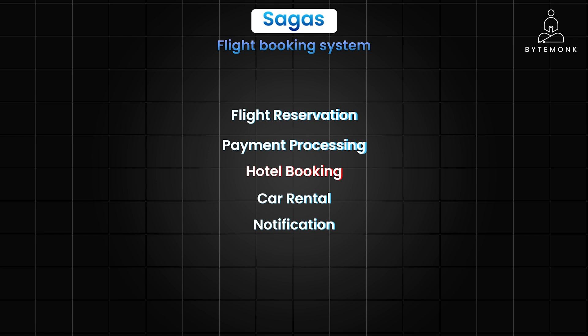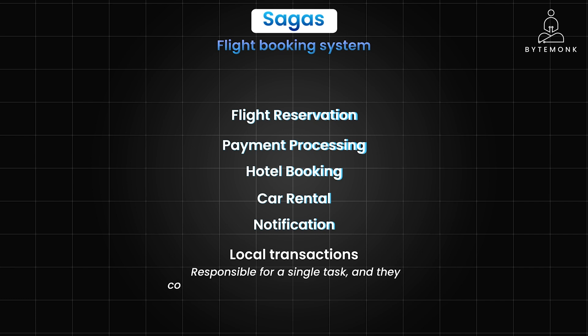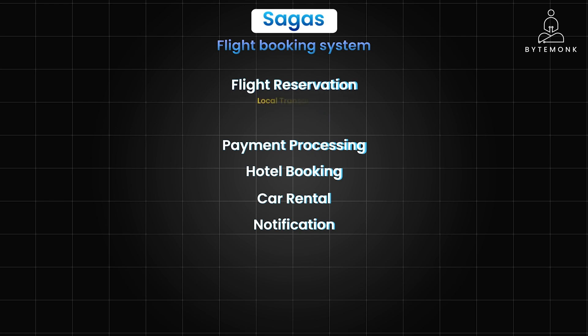A saga is a way to manage the complexity and ensure consistency across multiple services. It breaks down the booking process into a series of smaller local transactions. Each local transaction is responsible for a single task, and they communicate with each other through events. So, flight reservation becomes local transaction 1: the booking service attempts to reserve a seat on the chosen flight. If successful, it emits a flight reserved event; if unsuccessful, it emits a flight reservation failed event.